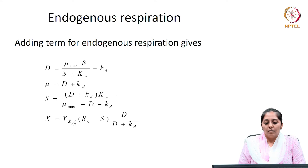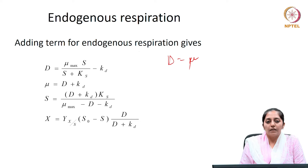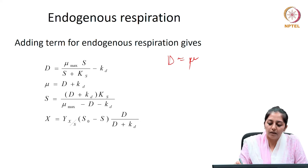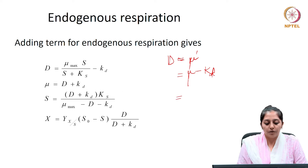Now let us see how endogenous respiration is taken into account in a continuous reactor. In a continuous system at steady state, D = μ, where μ in the case of endogenous respiration is the net specific growth rate. When there is endogenous respiration, it will be the actual specific growth rate minus kd, where kd is the rate constant for endogenous respiration. Therefore, your actual specific growth rate can be written as D + kd.